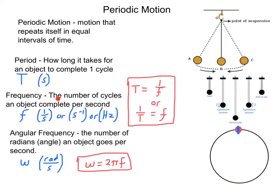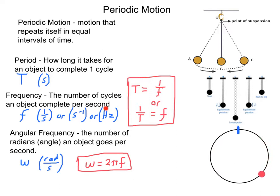Frequency is the number of cycles an object completes per second. You could substitute 'revolutions' for cycles — the number of times it goes around the circle. So the number of cycles an object completes per second.